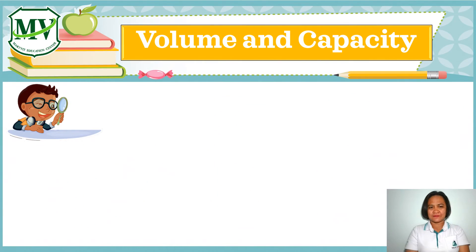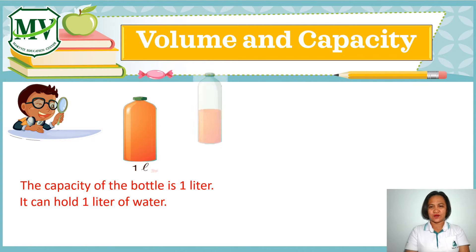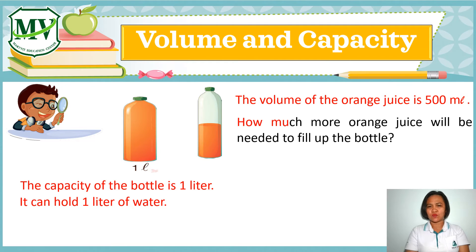The capacity of the bottle is 1 liter — it can hold 1 liter of water. The volume of the orange juice is 500 ml. How much more orange juice will be needed to fill up the bottle? We need 500 ml more to fill up the bottle.